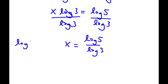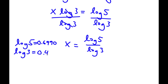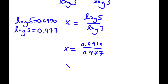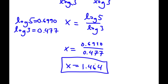Now log 5 is equal to 0.6990, and log 3 is equal to 0.477. So x equals 0.6990 over 0.477, which is equal to approximately 1.464. So 1.464 is our answer.